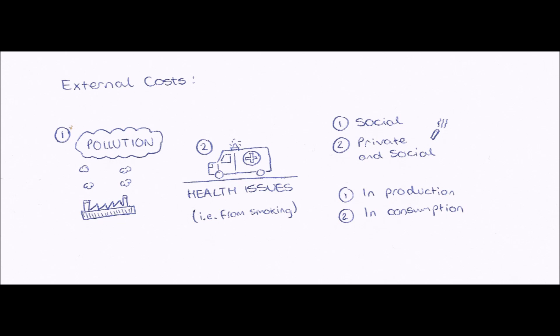So next, let's look at external costs. And these are obviously going to be knock-on effects of production or consumption that are negative. They have a bad impact. So two examples here would be pollution or health issues. So for example from smoking, you get things like lung cancer. And pollution, or number one in this case, it is a social external cost.